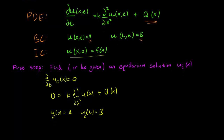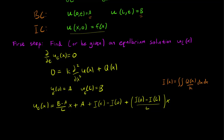For this problem, I'm just going to give you what the equilibrium solution is. Explicitly, we have u_e(x) equal to this term, where I(x) is the second antiderivative of Q(x)/k. You can check on your own time that this works and that it indeed satisfies all the properties we talked about. But the actual form of the equilibrium solution isn't that important — what's important is that there exists one.